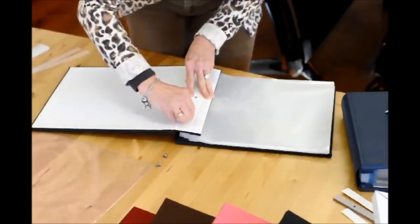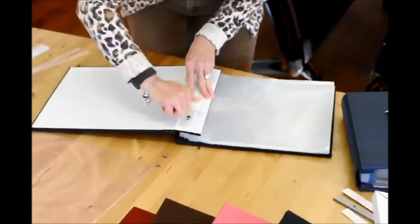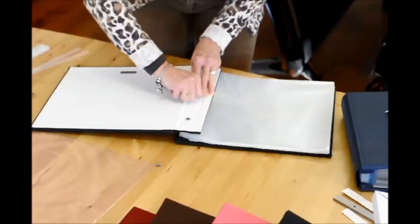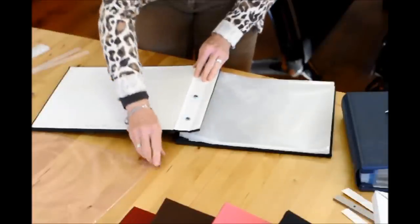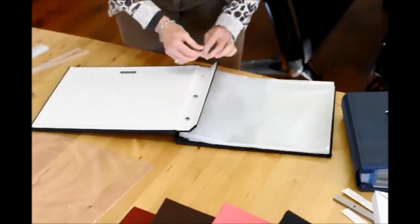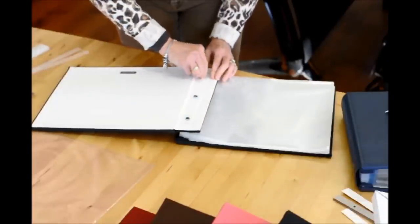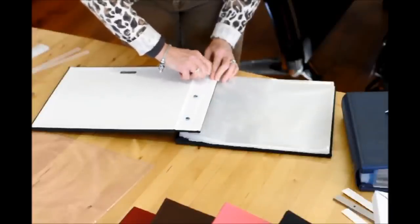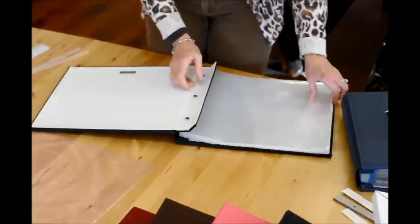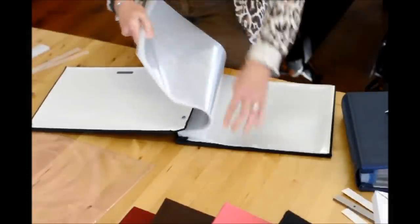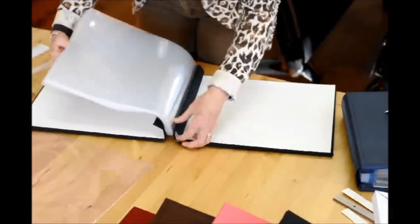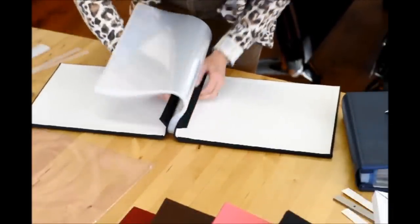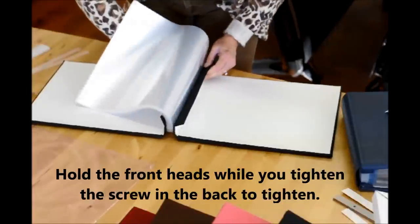And now you just take your end posts, and I just lightly screw them in. Personally, I find I like to put my end posts in the back so that if I want to expand my book or take pages out, I can easily do so. You'll go back to the front of the book, and just to make sure it's nice and tight, you'll hold that with your finger and turn each screw that's in the back.